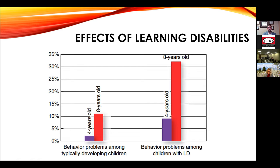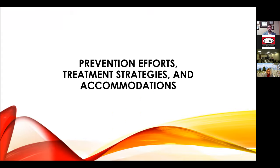Behavior problems are much more prevalent in children with learning disabilities, especially as they grow older. By about age eight, when in first, second, and third grade and expected to do increasingly difficult work, behavior problems among children with learning disabilities reach about 30%. Academic work demands are much higher than they were 20 to 30 years ago.